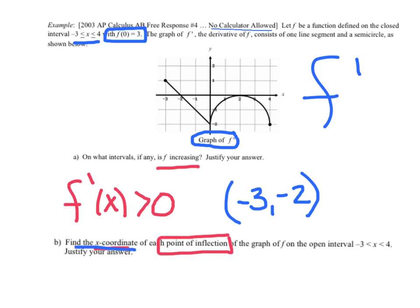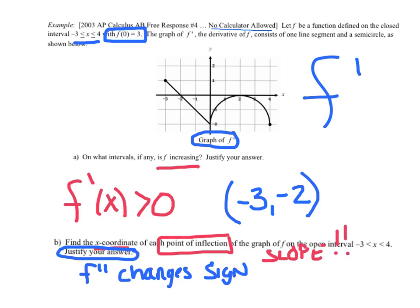I start with the justification and then it's easier to think about what I want. A point of inflection happens when f double prime changes signs. Now I know what I'm looking for. I need to know when f double prime changes signs. If this is f prime and I want f double prime, I am now looking at the slope. To get from f prime to f double prime, I need the slope. This whole section has a slope that is negative. Then my slope is positive. Then my slope is negative.